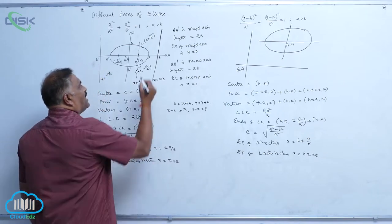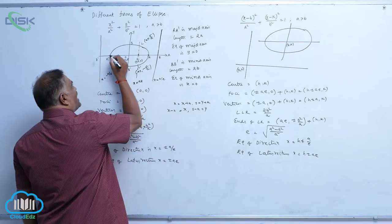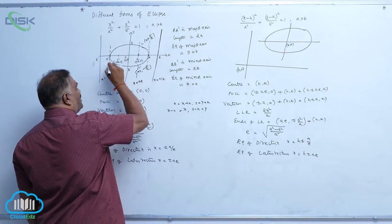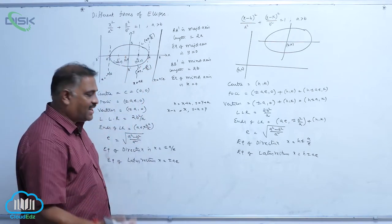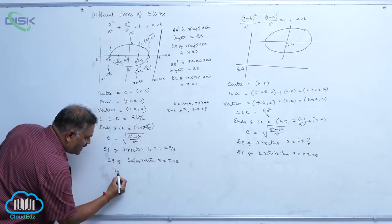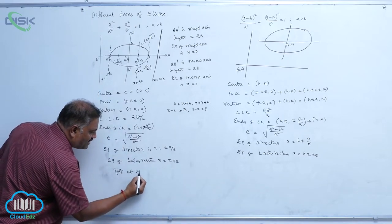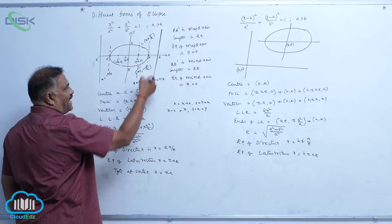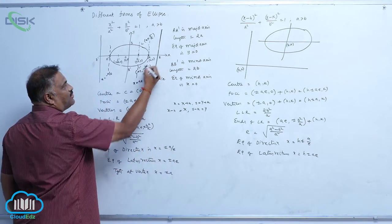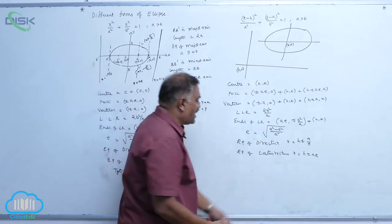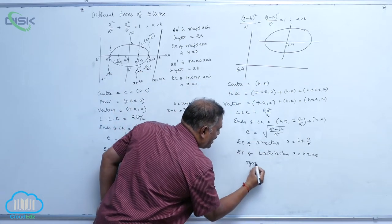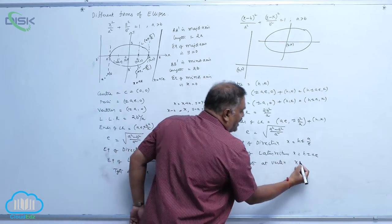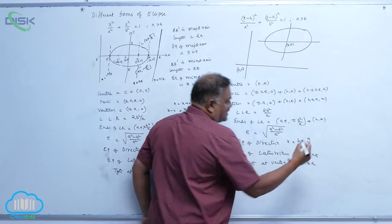We also observe that tangents can be drawn at the vertices. For the standard ellipse, the tangent at the vertex is x = ±a. For the shifted ellipse, the tangent at the vertex is x = h ± a.